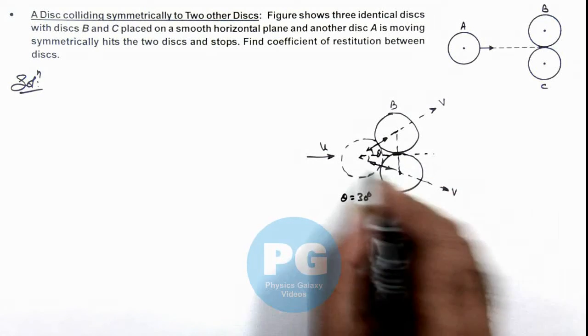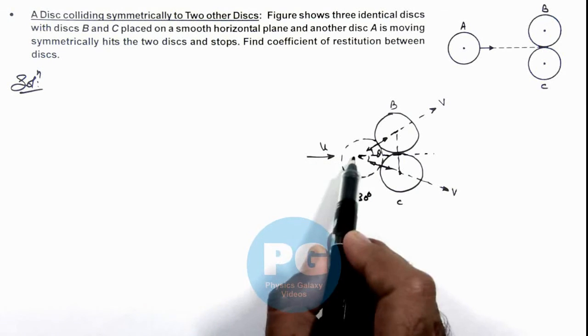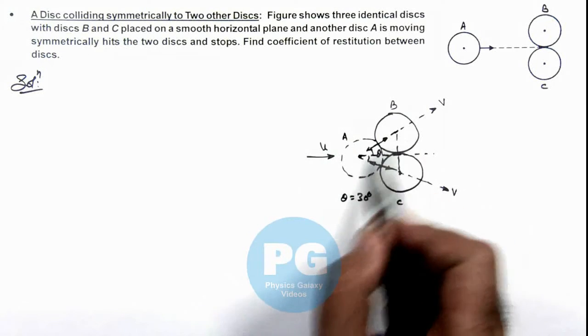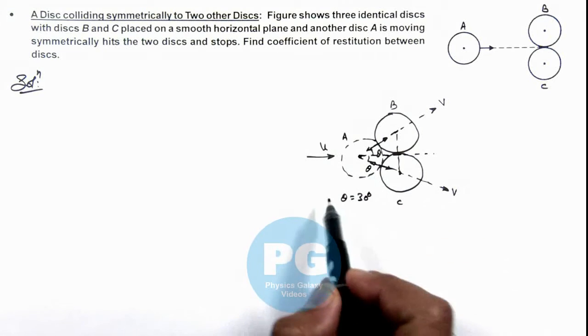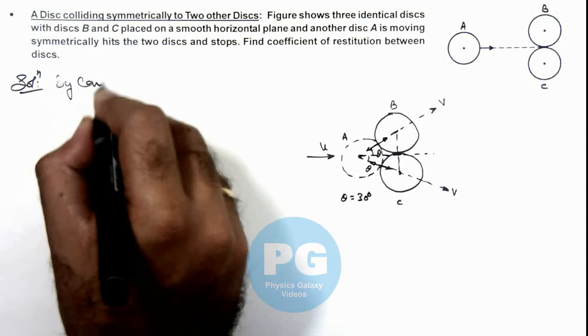Theta is the angle which the initial velocity of ball A makes with the line of impact on both of these balls. So here we can write, by conservation of momentum...